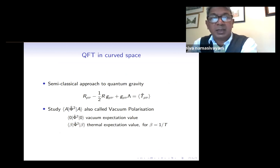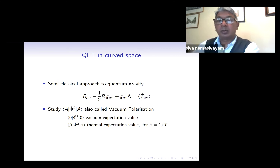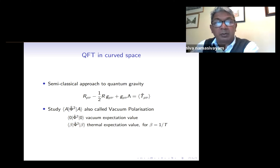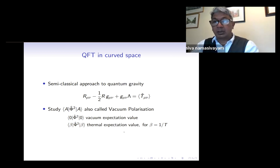We work in the semi-classical approach to quantum gravity whereby the metric in Einstein's field equation is kept in its classical form and we promote the stress energy tensor to the expectation value of its operator. Whilst we will be turning our attention to the stress-energy tensor in due course, at the moment we have been focusing on the expectation value of the square of a scalar field in a state A, which is called the vacuum polarisation. When that state is a vacuum state we refer to the vacuum expectation value, and when that state is in a thermal state characterised by inverse temperature beta we refer to the thermal expectation values.